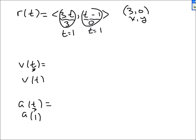To get v of t, you take the derivative of r. The derivative of r is v. The derivative of 3t is 3, and the derivative of t minus 1 is 1. It's a constant.